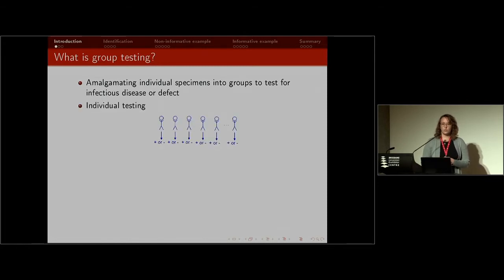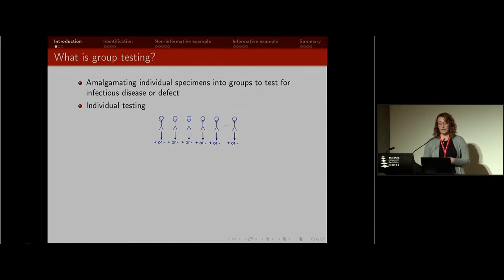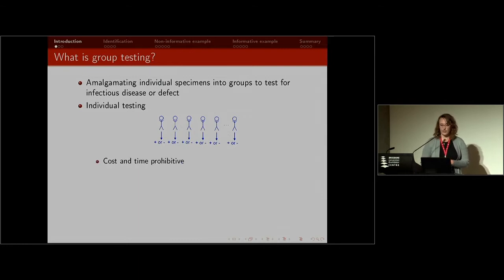Typically when you use individual testing, you have a binary response, so each individual is positive or negative for a disease, say HIV. This can be incredibly cost and time prohibitive. Tests such as the HIV test are pretty expensive, and if you imagine the number of people that you might need to test who donate blood, that gets incredibly expensive if you're testing each person individually.